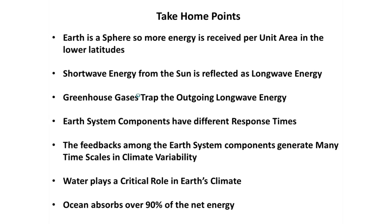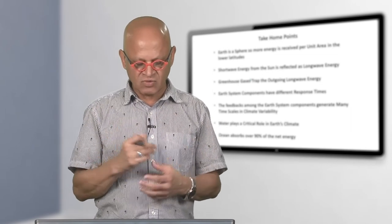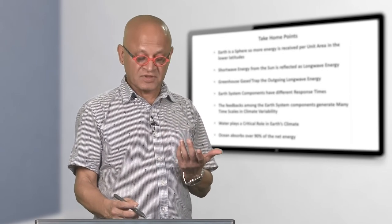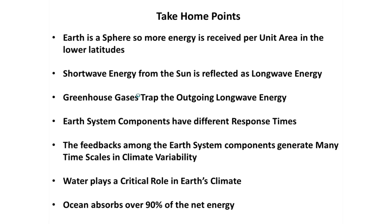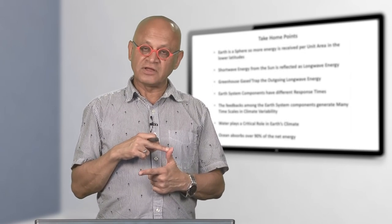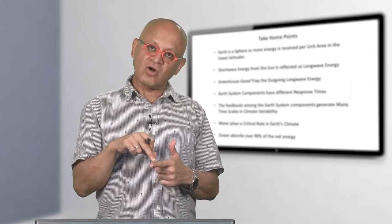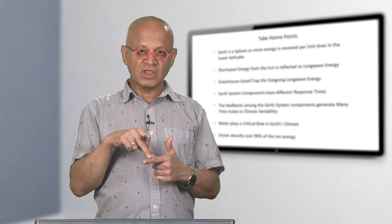Water plays a critical role in earth's climate because it stays in three phases, moves energy around, and is a greenhouse gas. It is also a universal solvent, dissolving pretty much everything on earth. The ocean absorbs over 90 percent of the net energy from human activities, so global warming is heavily modulated by the ocean — ocean and water together are very critical for what weather and climate we get and how earth's climate will behave in the future.